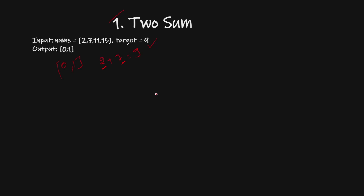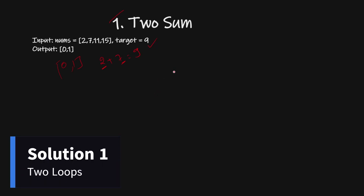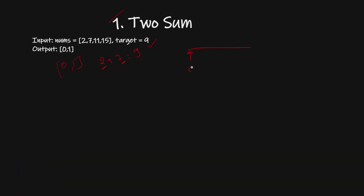The first intuitive solution uses two pointers: the first pointer starts at index 0 and the second pointer starts at i plus 1. From i plus 1, we check in the rest of the array if we have target minus a[i]. If it is there, we return the i-th index and that j index. The time complexity of this solution is O(n²) and the space complexity is O(1) because we are not using any extra space.